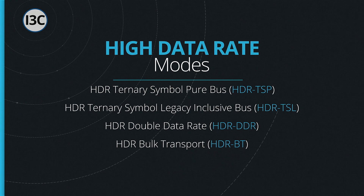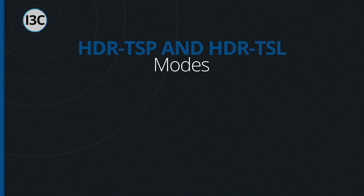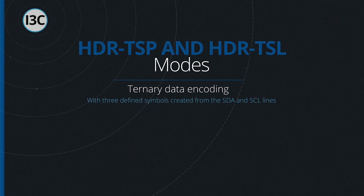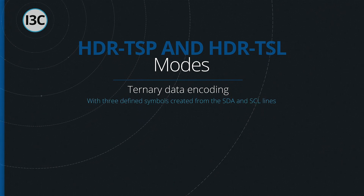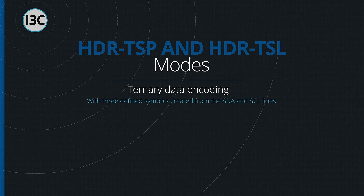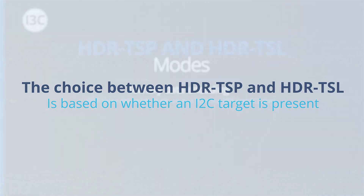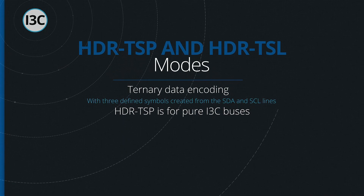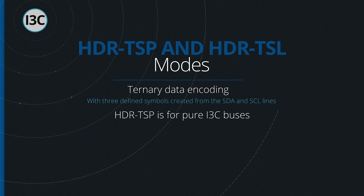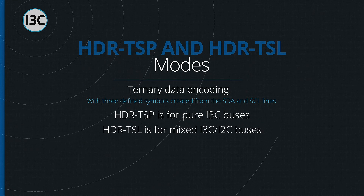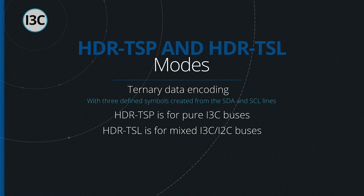The clock rate doesn't change while in HDR mode, but the way data is encoded does change. In HDR TSP and HDR TSL modes, data is transmitted in ternary with three defined symbols created from the SDA and SCL lines. The choice between HDR TSP and HDR TSL is based on whether an i2C target is present. HDR TSP can only be used when i3C targets are present, whereas HDR TSL is used when a legacy i2C target is present.